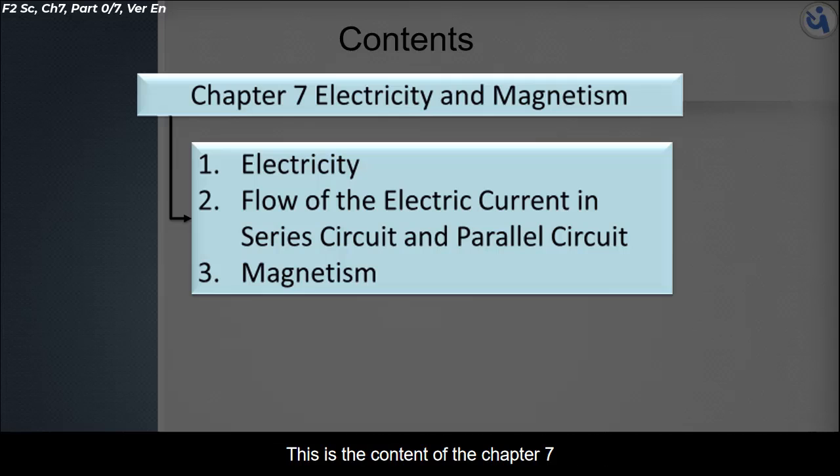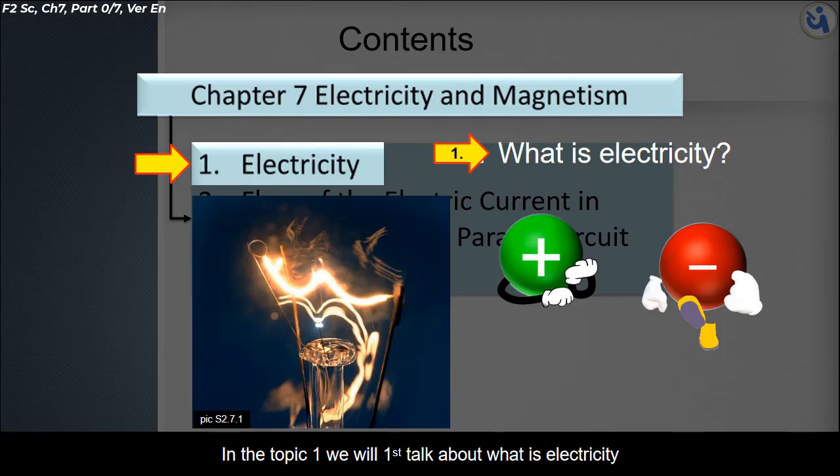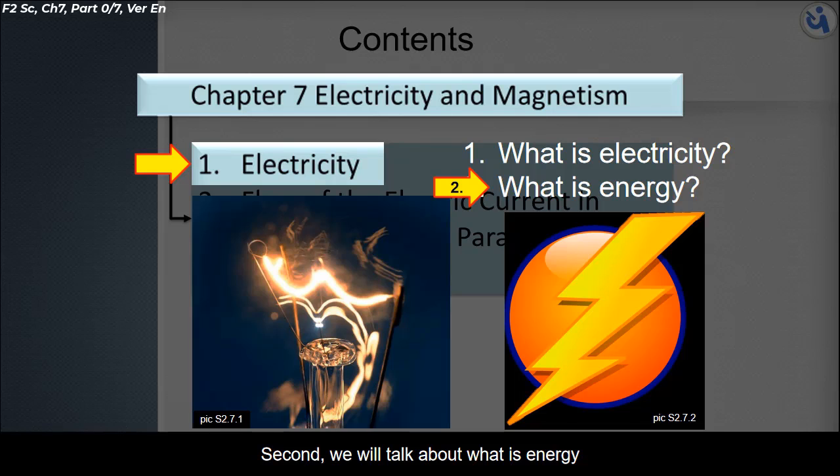This is the content of Chapter 7. Chapter 7 consists of three topics. The first topic of the chapter is electricity. In topic 1, we will first talk about what is electricity, second we will talk about what is energy.